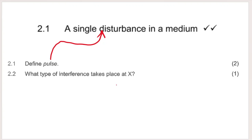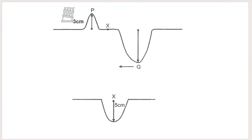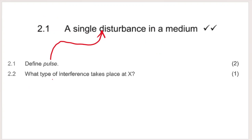What type of interference takes place at X? Pulse P was going up in the positive direction with amplitude 3 cm. Q had an unknown amplitude going downward — negative if we take upward as positive. The resultant at X is 5 cm downward. Because there was cancelling out occurring, this is destructive interference.